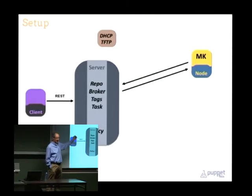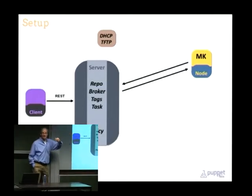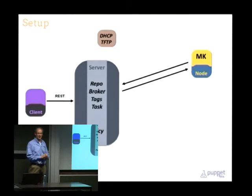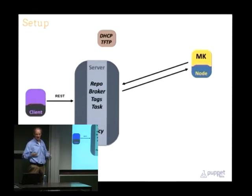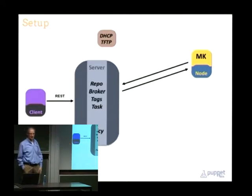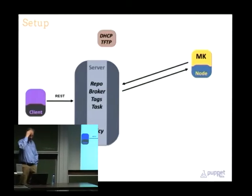The way Razor works is that when a node comes in, Razor goes through all the tags it has and the rules associated with them and checks whether those rules match that node. Your rule might say a node must have more than eight cores and 16 gigs of RAM, then you tag it as a medium-big machine. A policy also carries tags, and once the tags for policy and the tags on the node match, the policy matches against the node. Tasks are the actual things that do the installation - the kickstart scripts and all that. We initially called them installers but we want to do more than just installation, so we eventually settled on 'tasks.'